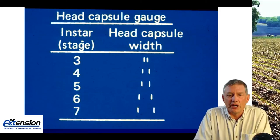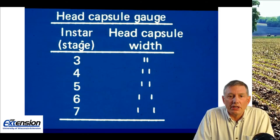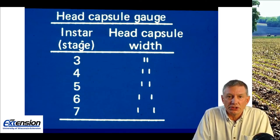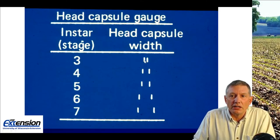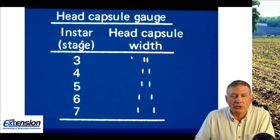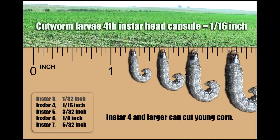To determine what instar you have, you cannot go by the length of the cutworm, but rather you have to look at the width of the head capsule. There is a copy of this head capsule gauge in A3646 — basically what you try to do with those captured larvae is try to find the box of best fit. Try to fit that head in between that box and that will correspond with your instar stage. It's important that your larvae are relatively small before you try to control them.